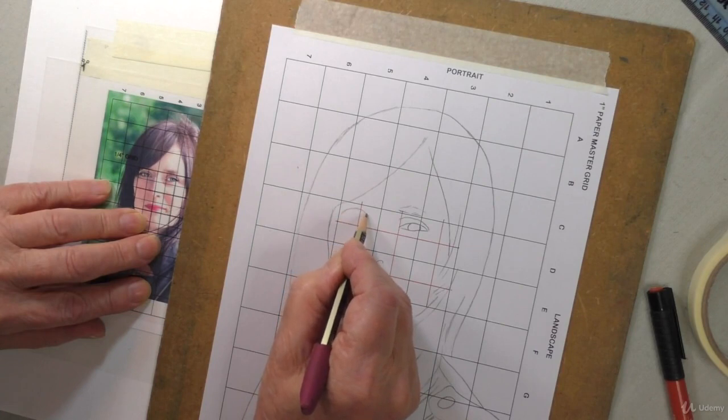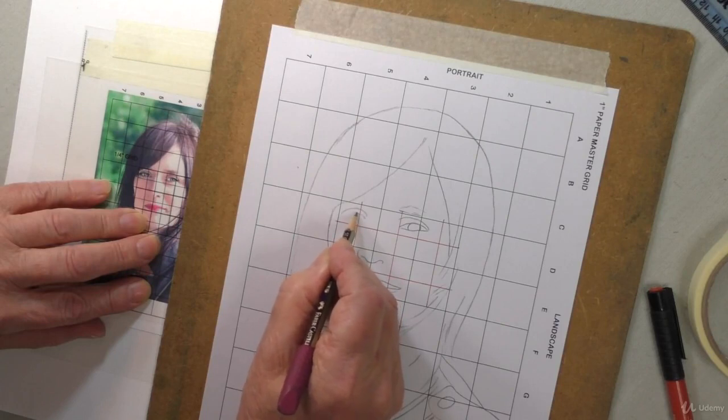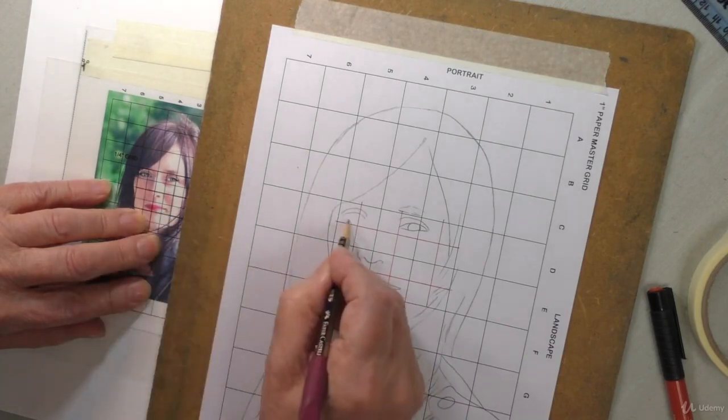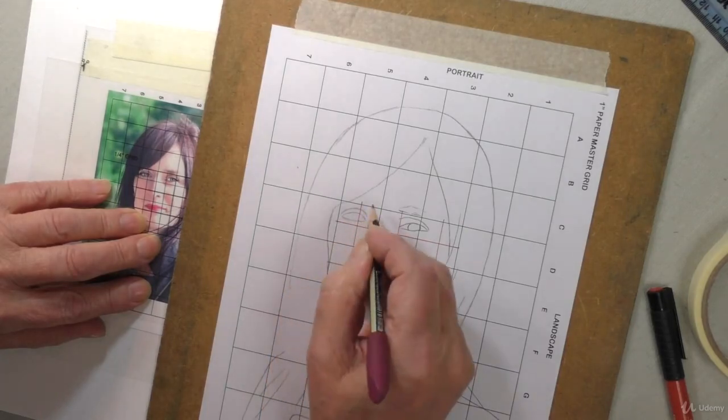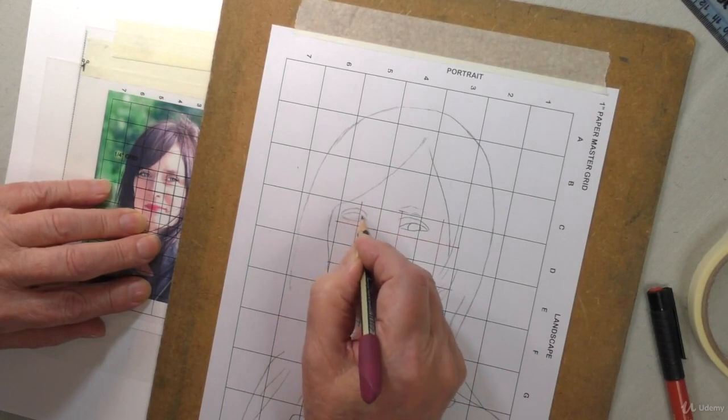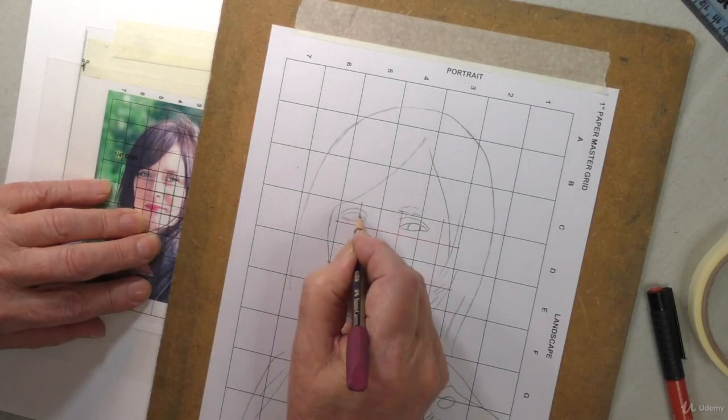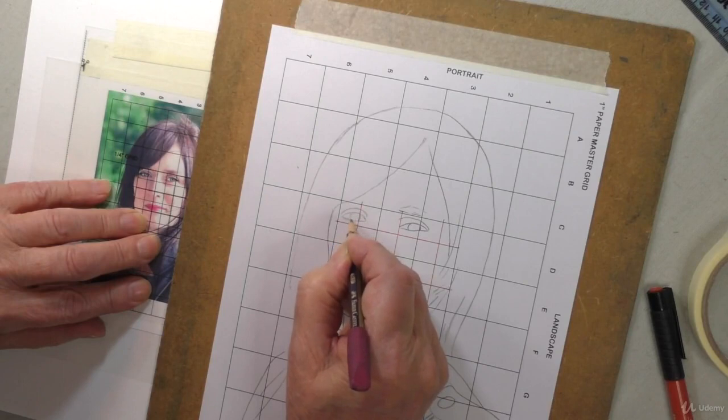And it continues on the other side there, and then that's the eyelid. And this you can see is quite close to the bottom, and it's like that. And then we've got the pupil in which is almost spot on that line there, just a little to one side of it and in there.